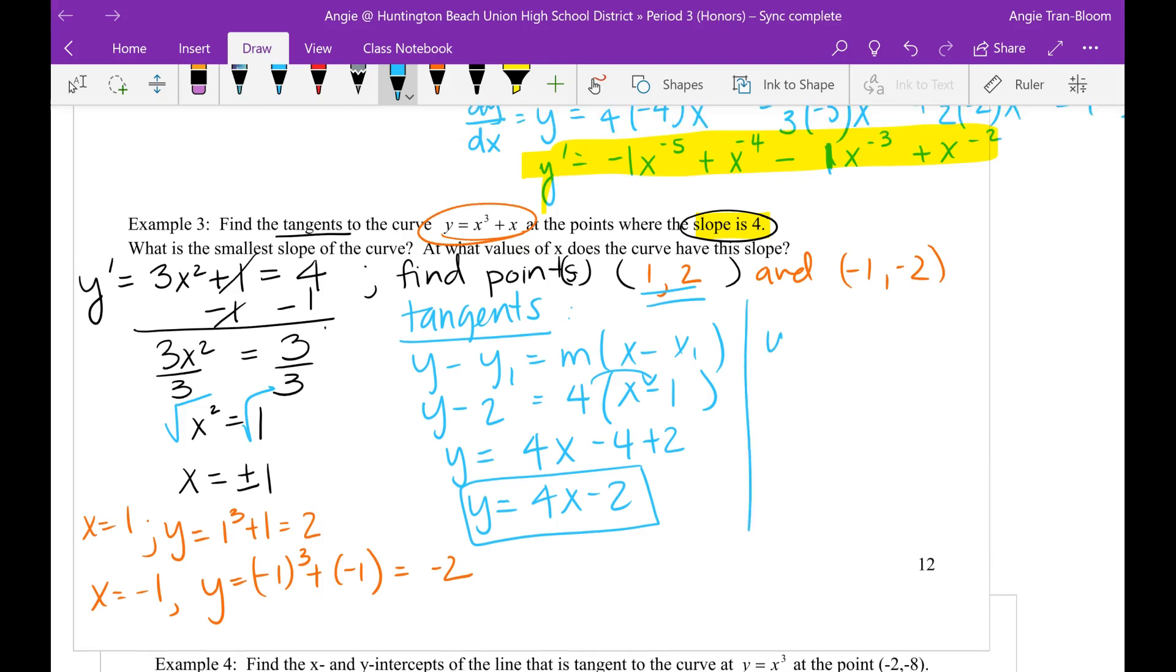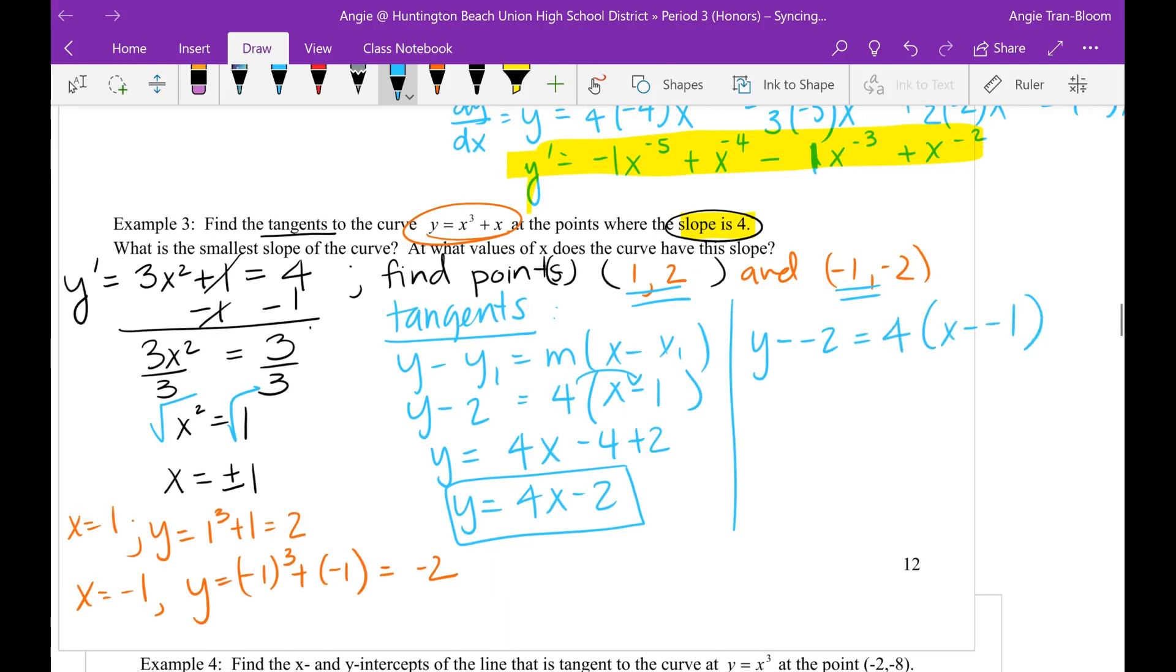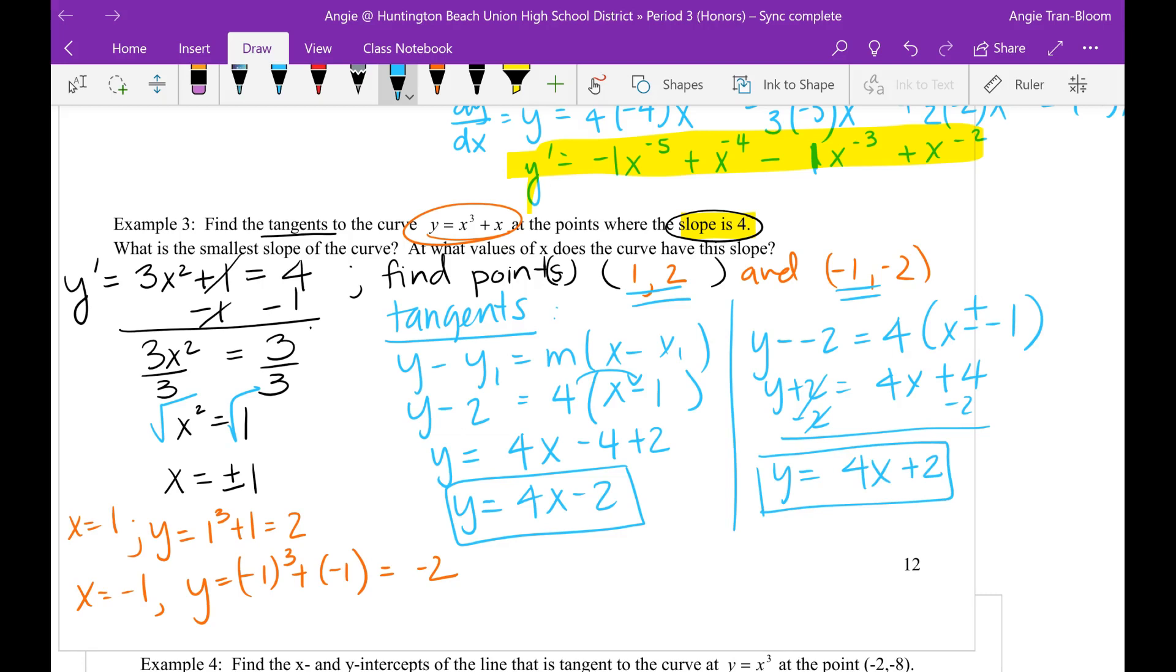Then my next one is going to be y minus minus 2, I'm using this one next, equals to the slope is 4, x minus minus 1. So y plus 2 equals 4x. This is going to become a positive. So 4x plus 4. Subtract 2 from both sides. So y equals 4x plus 2. So those are the two tangents of the function that both of them have a slope of 4.